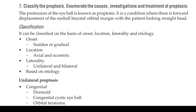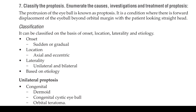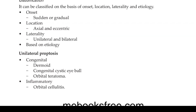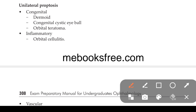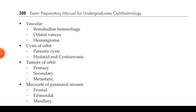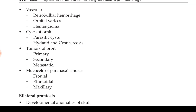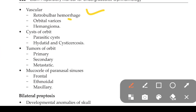Causes for unilateral proptosis: it may be congenital — dermoid, congenital cystic eyeball, orbital teratoma. Inflammatory causes include orbital cellulitis. Vascular causes include retroorbital hemorrhage, orbital varices, or hemangioma.